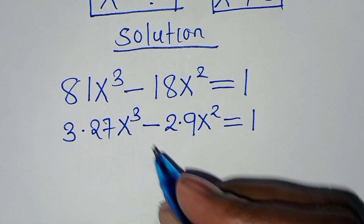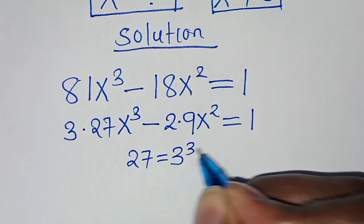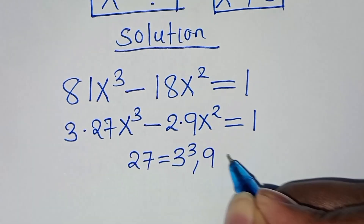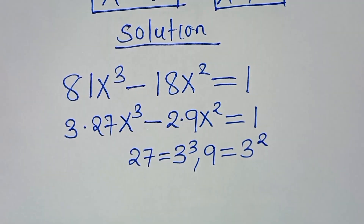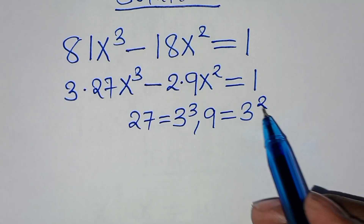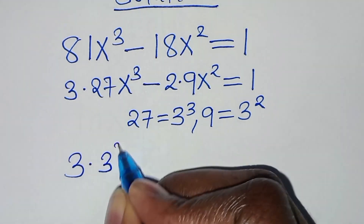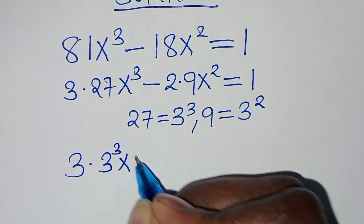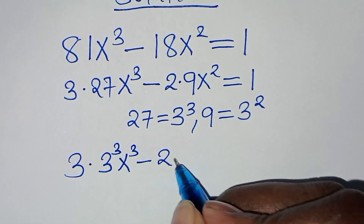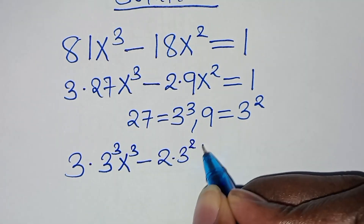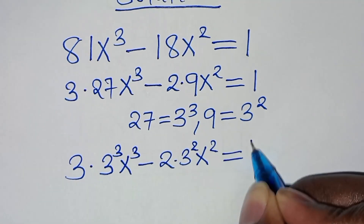The next step from here, we can express 27 as 3 to the power of 3, and we can express 9 as 3 to the power of 2. Substituting this, we have 3 times 3³ times x³, then subtract 2 times 3² times x², and this is equal to 1.